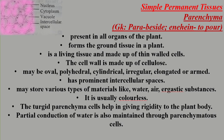Parenchyma cells are living tissues made up of thin-walled cells. They contain a nucleus, cytoplasm, vacuole, and intercellular spaces. The cell wall of parenchyma is made up of cellulose.